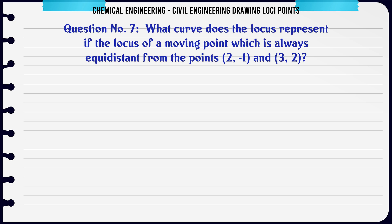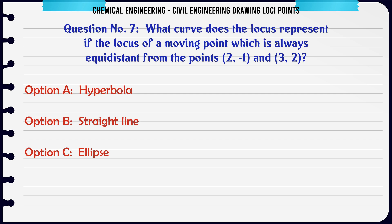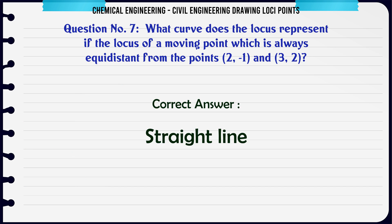What curve does the locus represent if a moving point is always equidistant from the points (2,1) and (3,2)? Options: a) hyperbola, b) straight line, c) ellipse, d) circle. The correct answer is straight line.